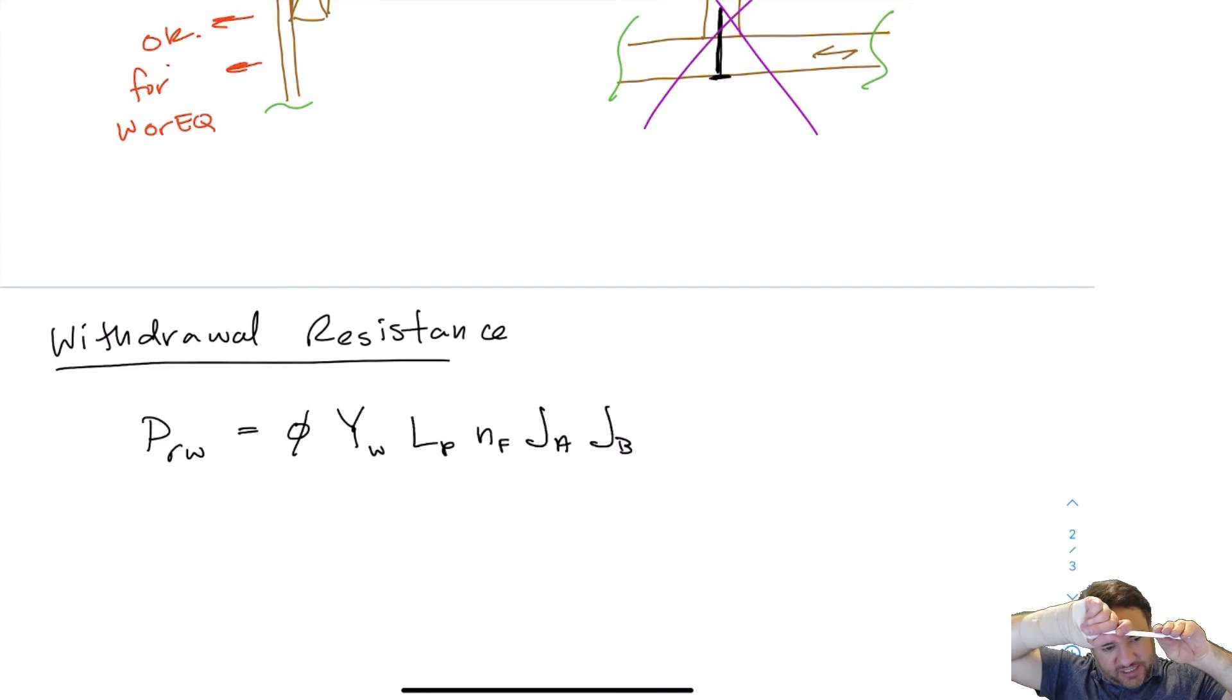So the more wood I spread apart the more normal force I have therefore the more friction I have. So the longer that nail is embedded the more friction force there is to resist the pullout. So that's why there is a LP parameter here which is the length of penetration.